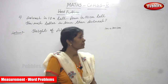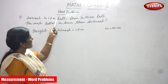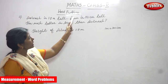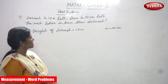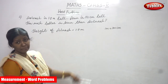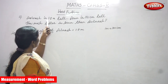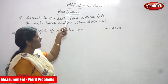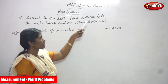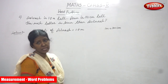We are going to do the second sum. Avinash is 1.8 meters tall. Arun is 191 centimeters tall. How much taller is Arun than Avinash? I will repeat the question: Avinash is 1.8 meters tall, Arun is 191 centimeters tall. How much taller is Arun than Avinash?